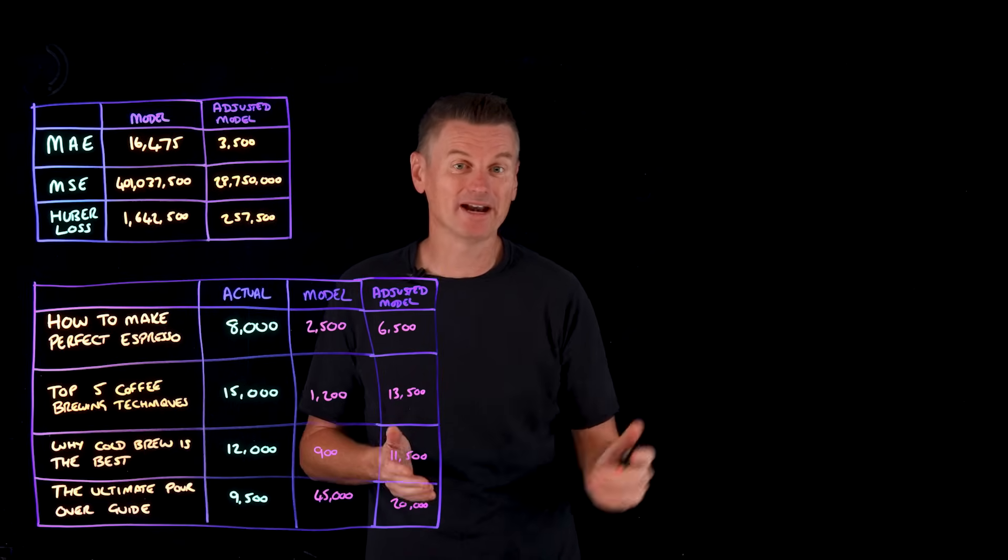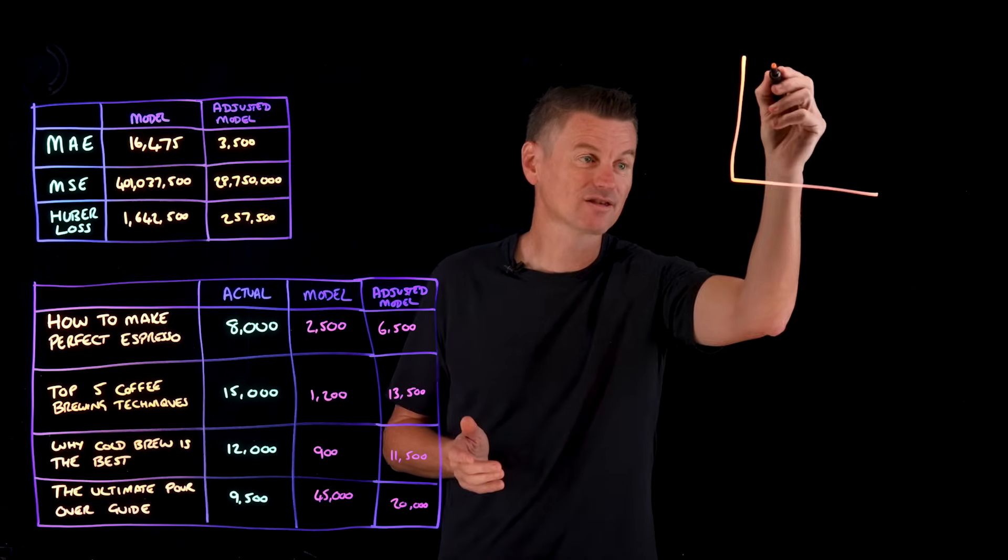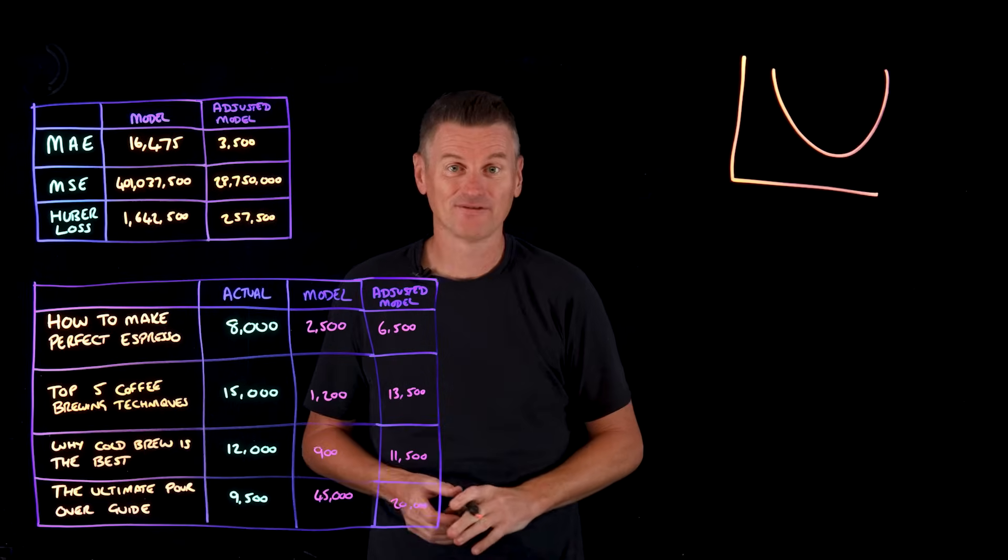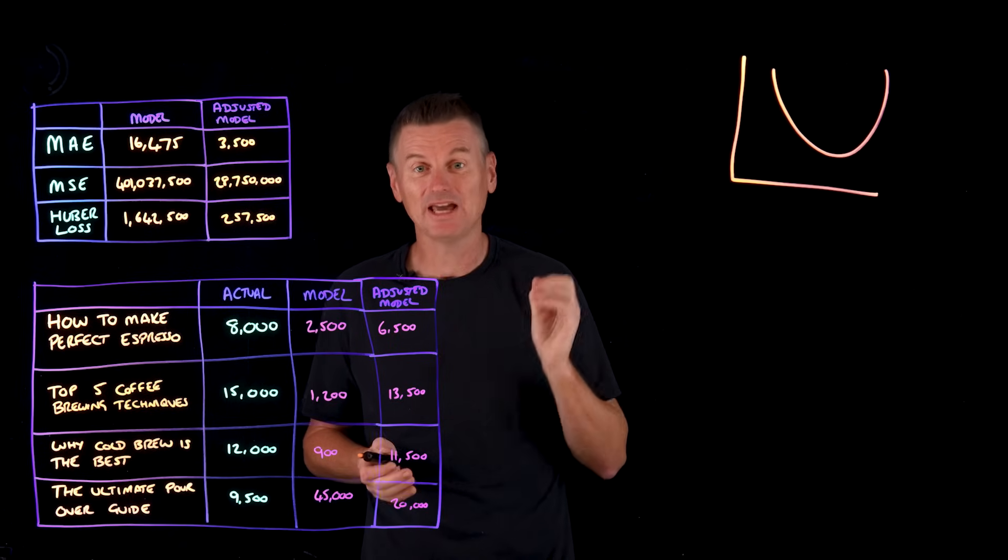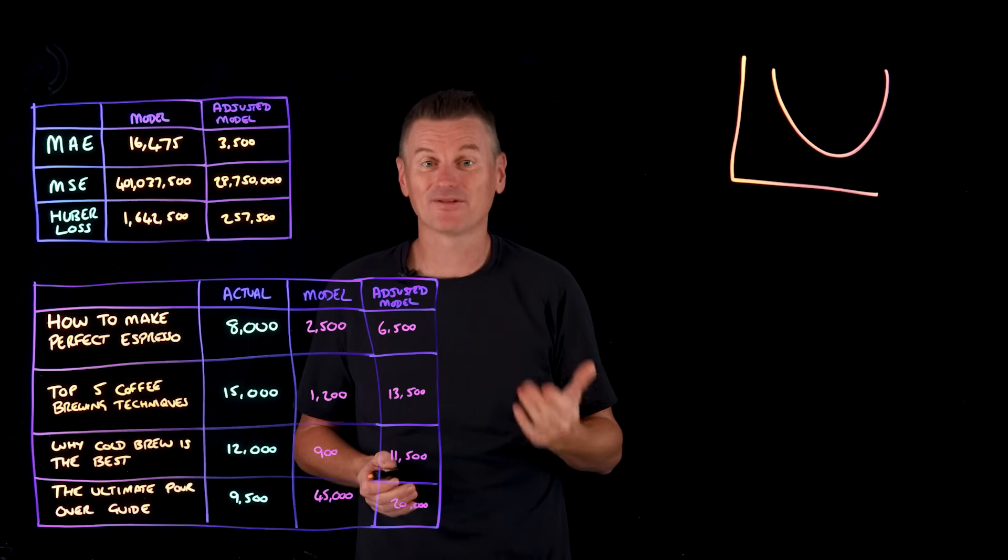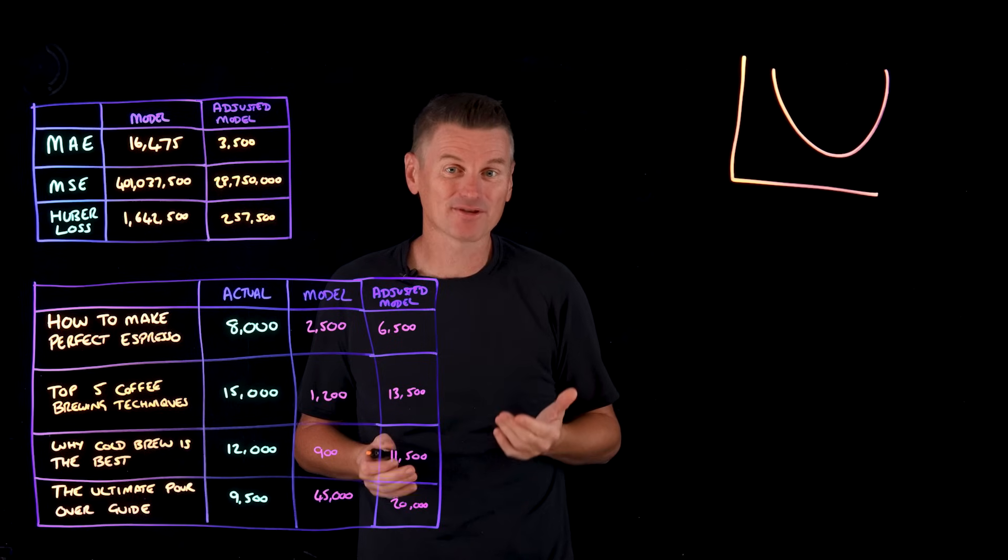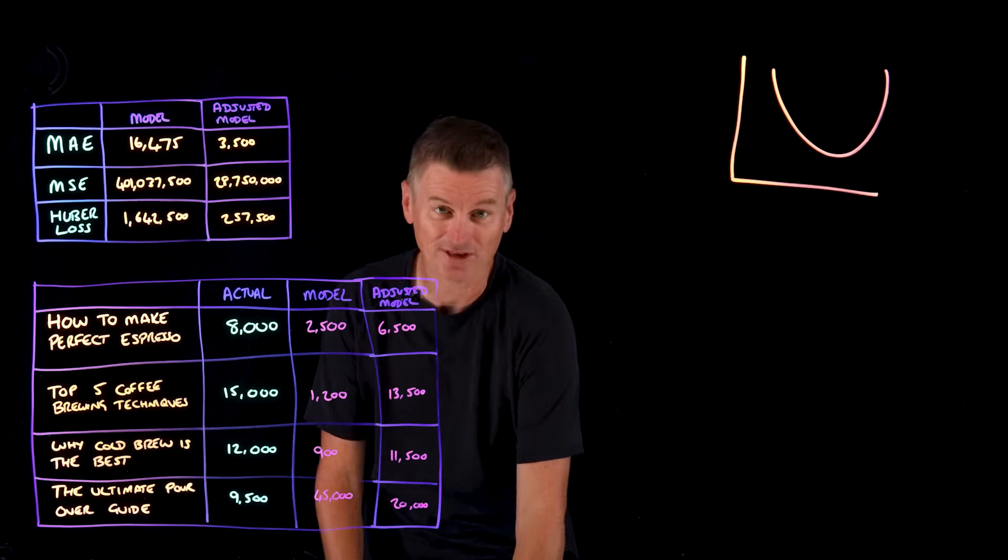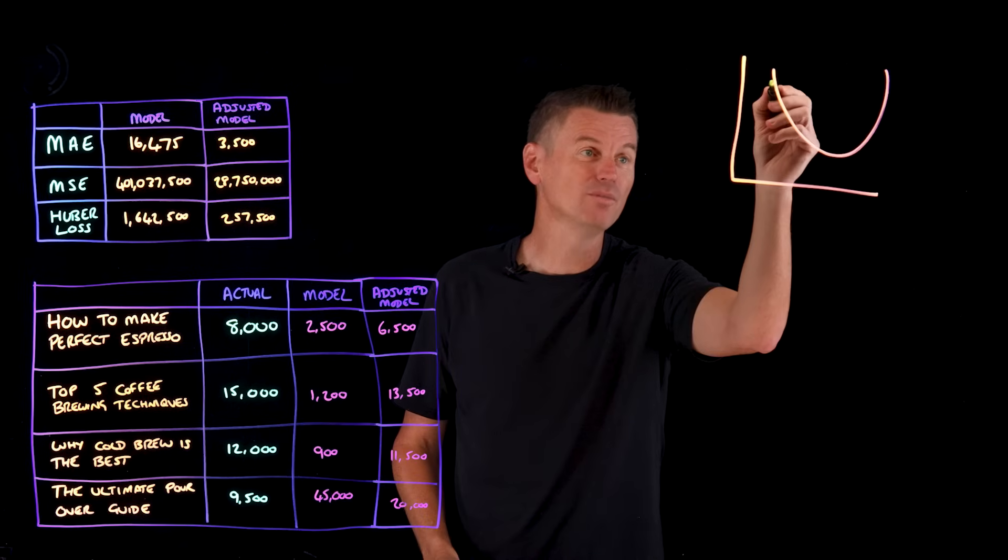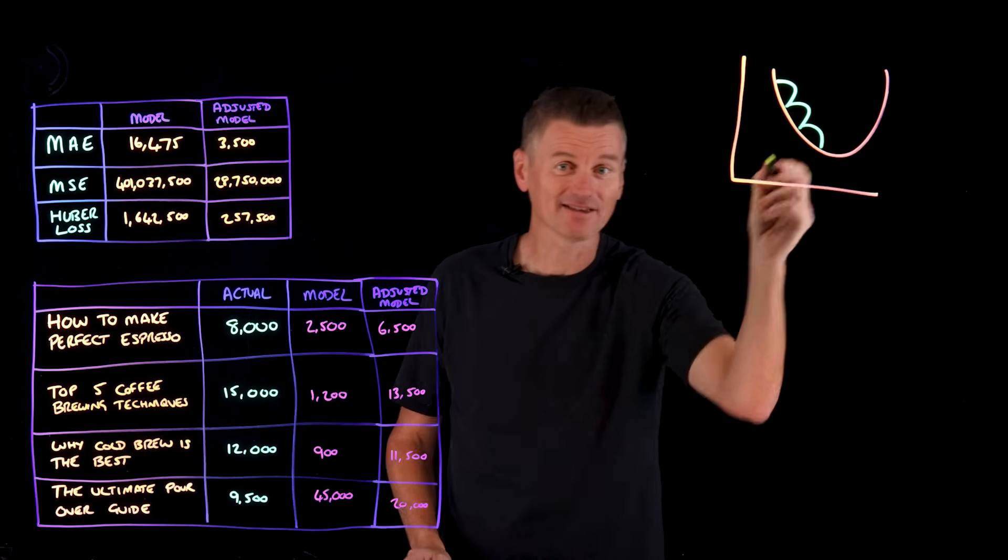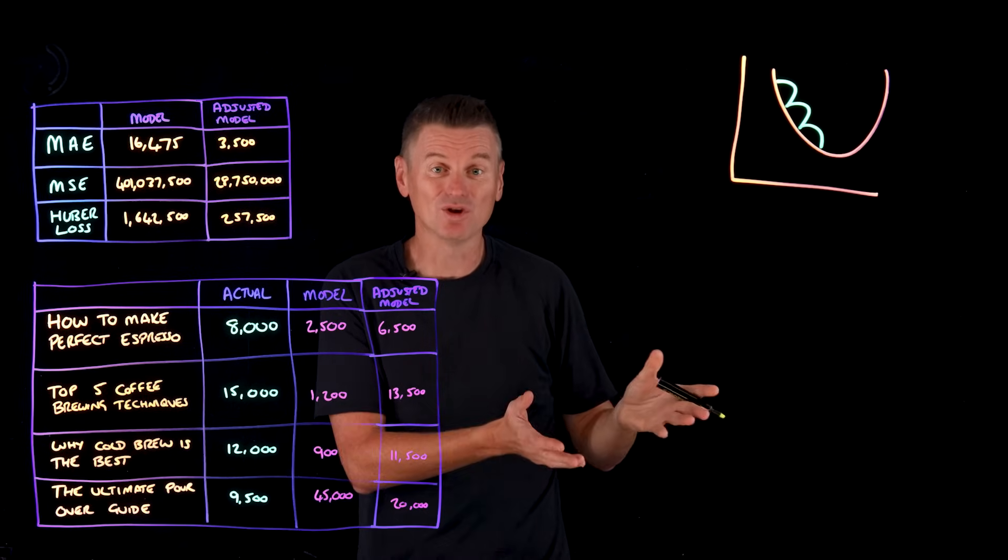But it can also be used as input into an algorithm that actually influences the model parameters to minimize loss, for example, by using gradient descent. That works by calculating the gradient or the slope of a loss function with respect to each parameter. Using the gradient of the loss function, optimization algorithms determine which direction to step the model in order to move down the gradient and therefore reduce loss.